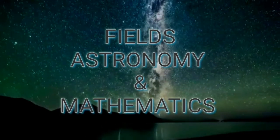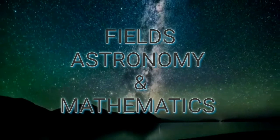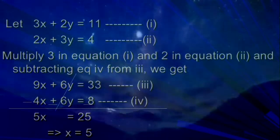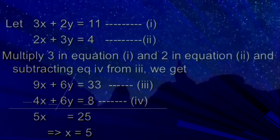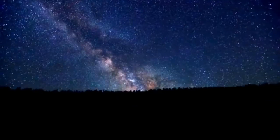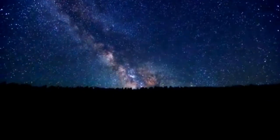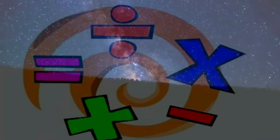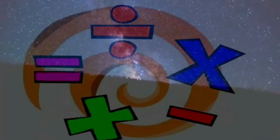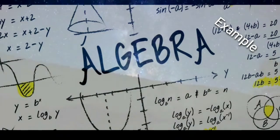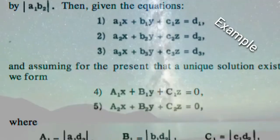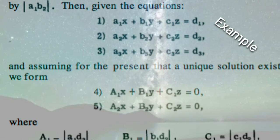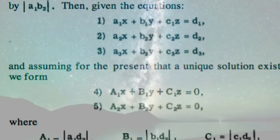Brahmagupta gave the solution of the general linear equation in Chapter 18 of Brahmasputa Siddhanta. In arithmetic, he covered the four fundamental operations: addition, subtraction, multiplication, and division. In algebra, he gave the solution of the general linear equation.